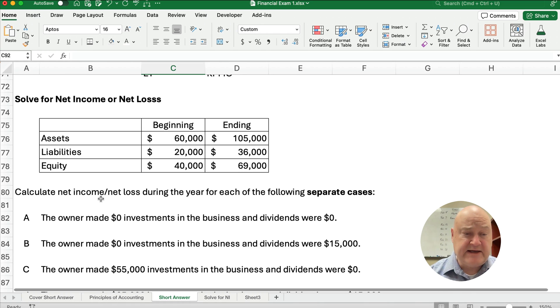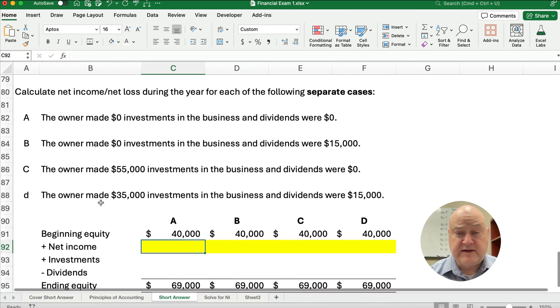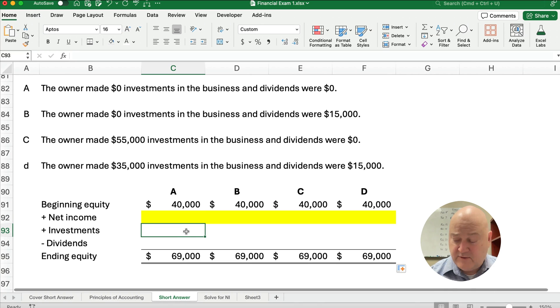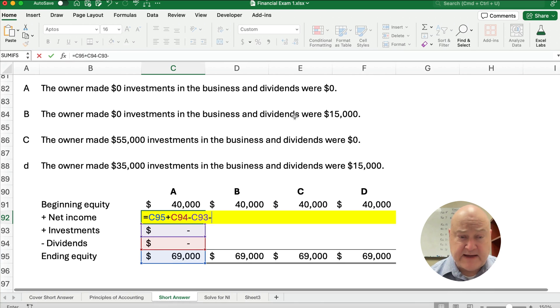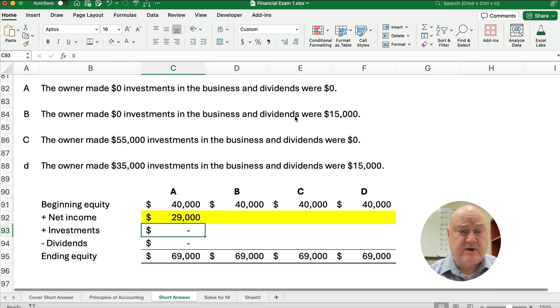So this is how you start with this problem. Now we're going to calculate net income or net loss under the following cases. So item A, the owner made zero investments and dividends were zero. This is the simplest problem we can do. We're going to take the 69,000 minus, I mean plus the dividends because we're going to reverse it, minus the investments, minus the beginning equity. So if we had beginning equity plus net income plus zero investments minus zero dividends, that equals 69,000. So our net income is 29,000 in item A.